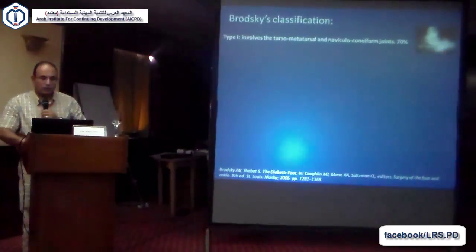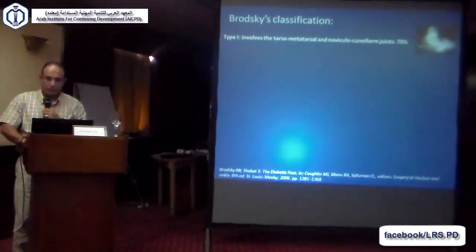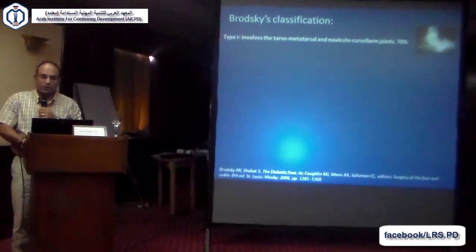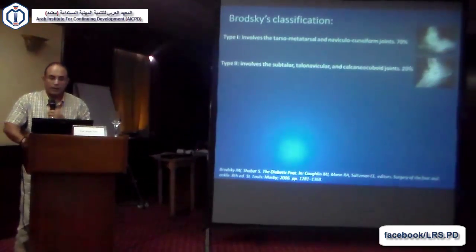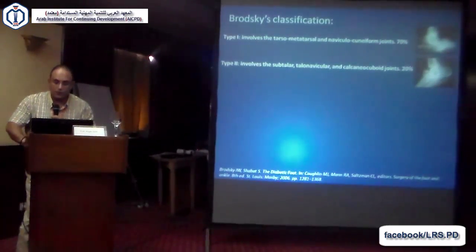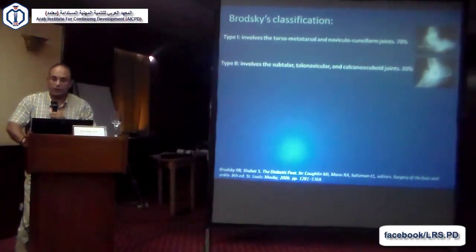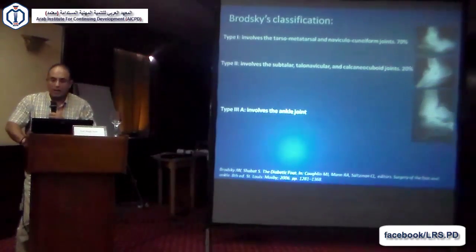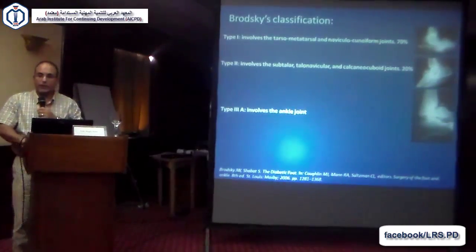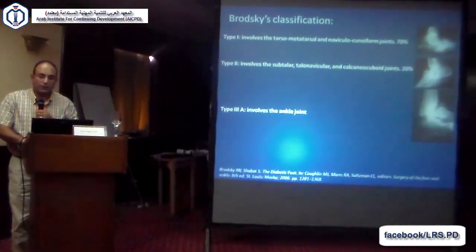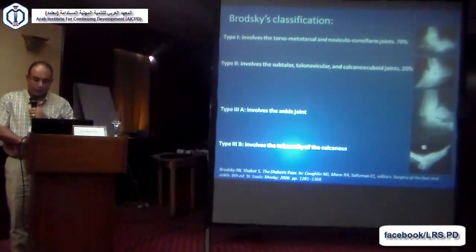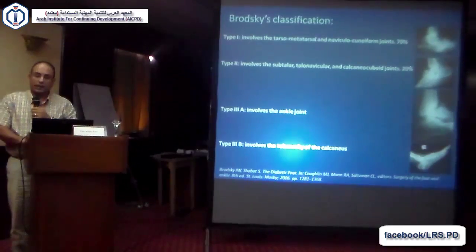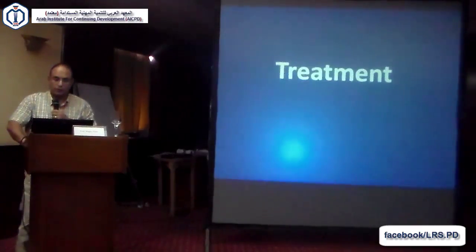The Sanders and Frykberg classification categorizes Charcot joints into three types. Type 1 includes the tarsometatarsal and metatarsophalangeal joints. Type 2 involves the subtalar and talonavicular joints. Type 3 is subdivided into type 3A where the ankle is involved, and type 3B where the calcaneus is affected.